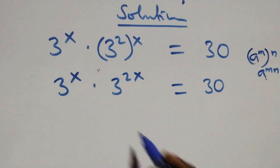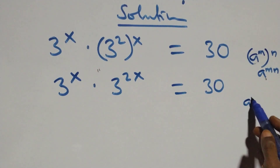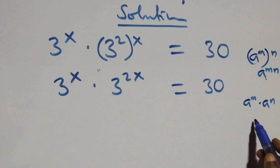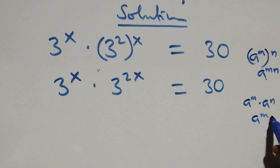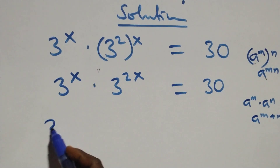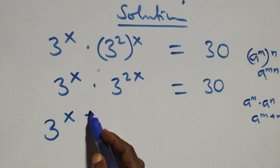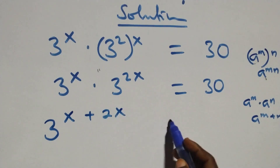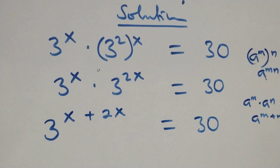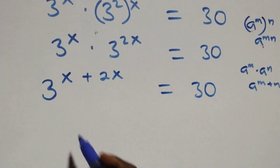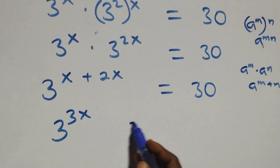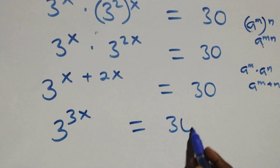This also follows from the rule: when we have a raised to power n times a raised to power n, this is the same as a raised to power n plus n. So this can be written as 3 raised to power x plus 2x, which equals 30. That gives us 3 raised to power 3x equals 30.